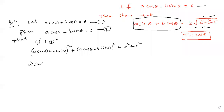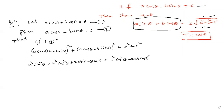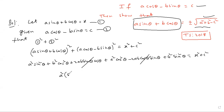Expanding: a square sin square theta plus b square cos square theta plus 2ab sin theta cos theta, plus a square cos square theta plus b square sin square theta minus 2ab cos theta sin theta, equals x square plus c square. The 2ab sin theta cos theta terms cancel out.